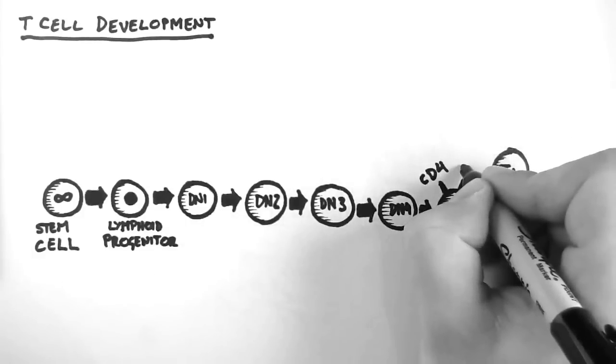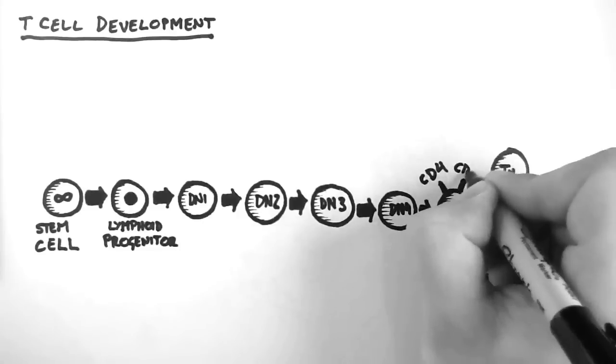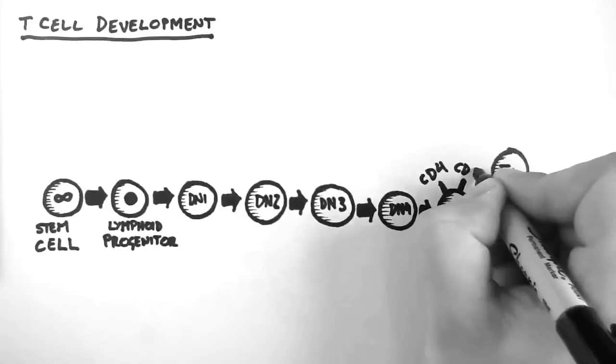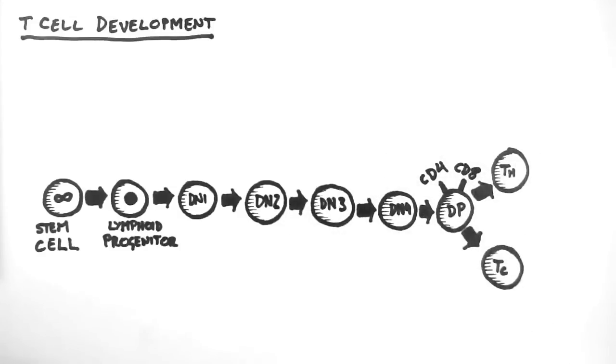As you have probably figured, the double positive cell expresses both the CD4 and CD8 glycoproteins. Or we could say, it is CD4 positive and CD8 positive.